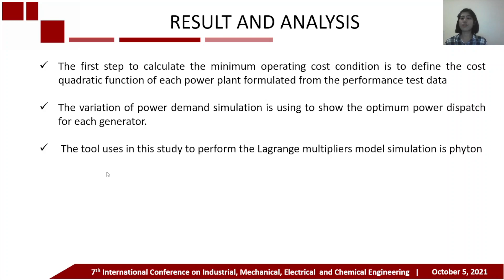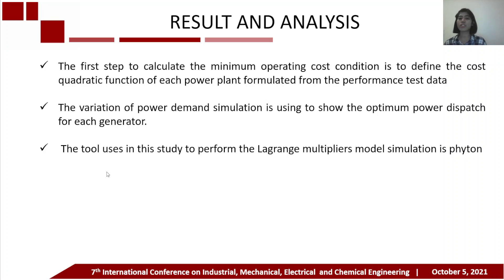The first step to calculate the minimum operating cost condition is deriving the cost quadratic function of each power plant formulated from performance test data. The variation of power demand simulation is used to show the optimum power dispatch for each generation. The tool used in this study to perform the Lagrange multiplier model simulation is MATLAB.